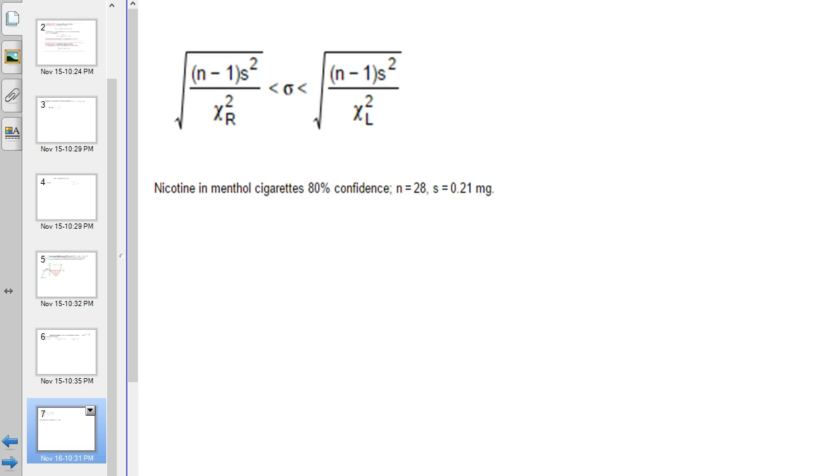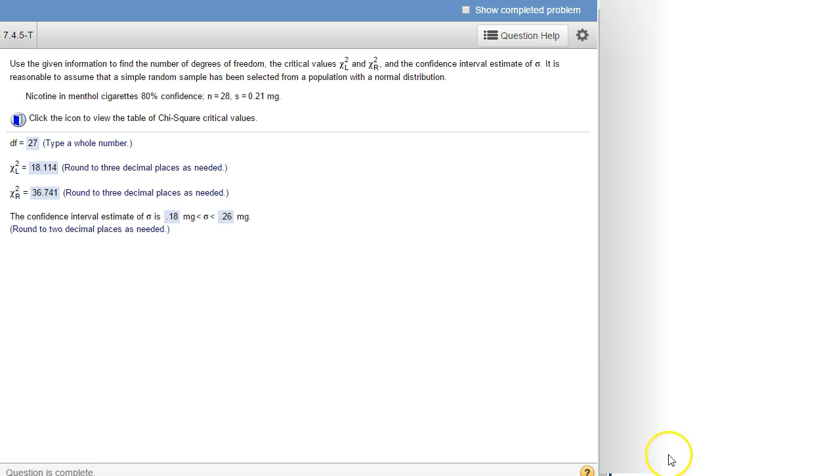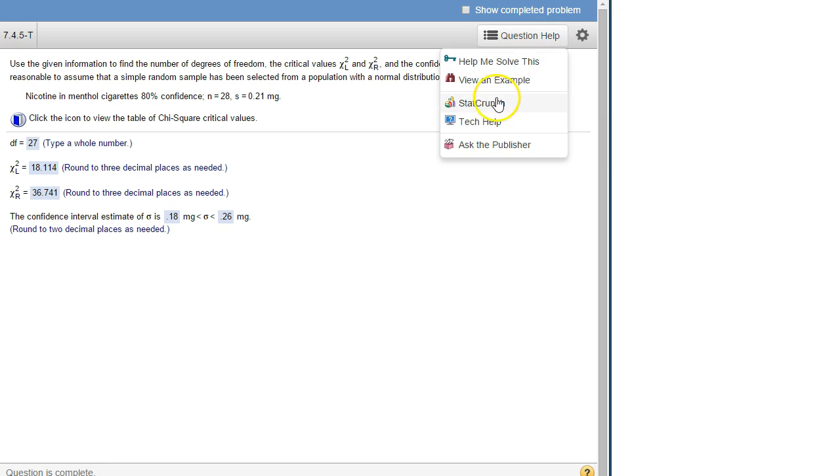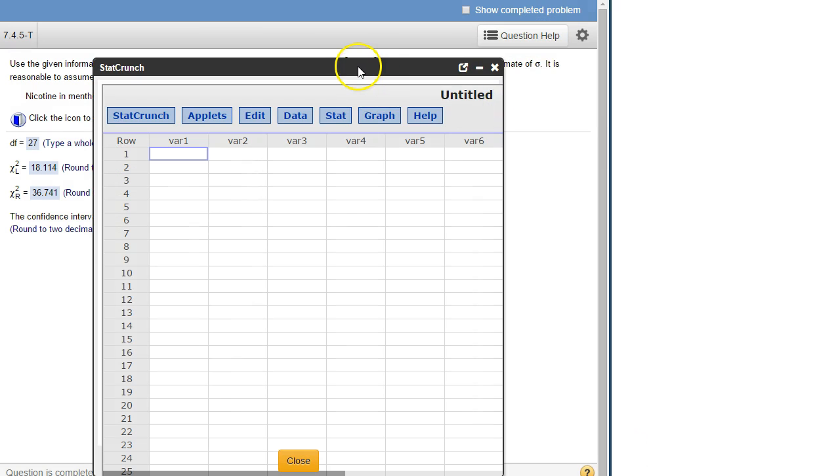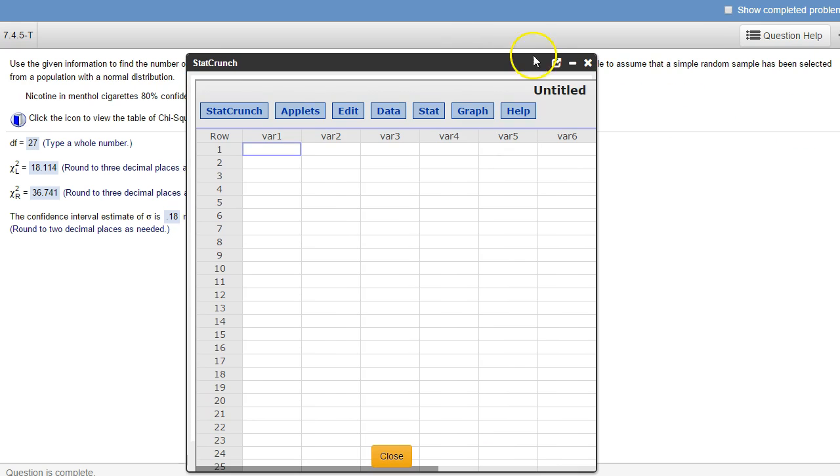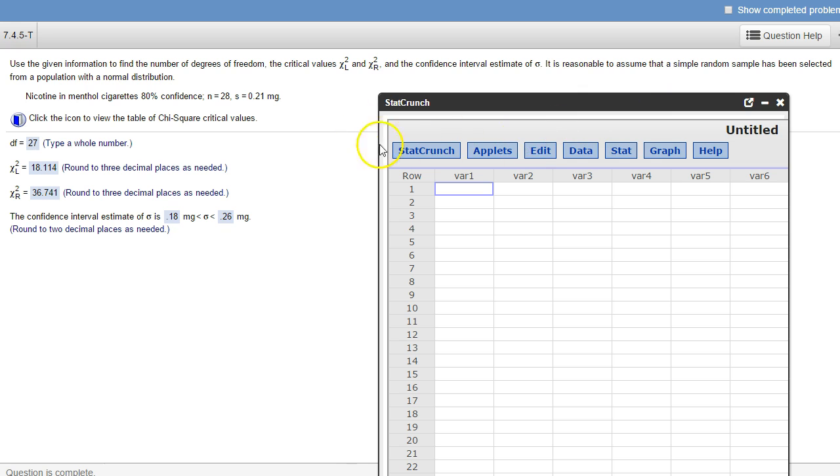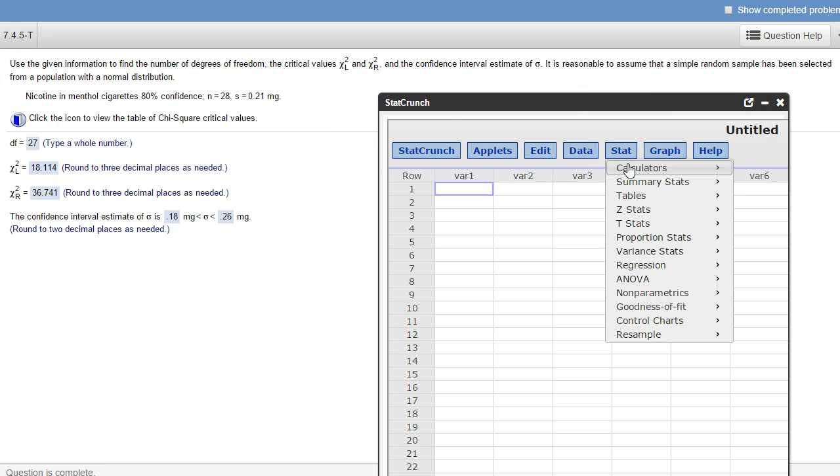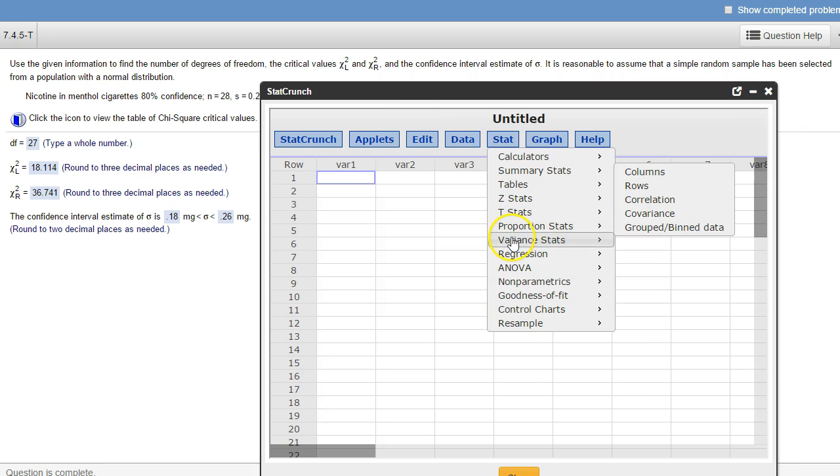So that's how you do it in the calculator, you just need to have that formula ready to go. In StatCrunch however, this is made a little bit easier. There's just one thing you have to do at the beginning and then one thing at the end. So what you have to do at the beginning is go under stat and then we want variance stats, one sample.